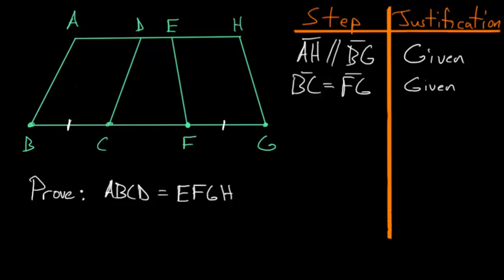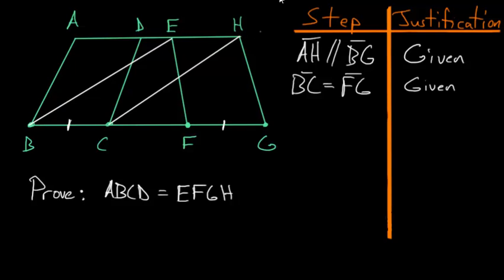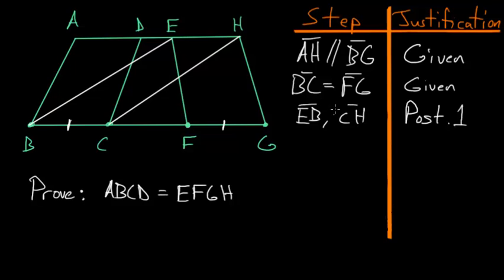To start, we first want to construct lines between the points B and E, and C and H, which we can do due to Postulate 1. So we just constructed the lines EB and CH.